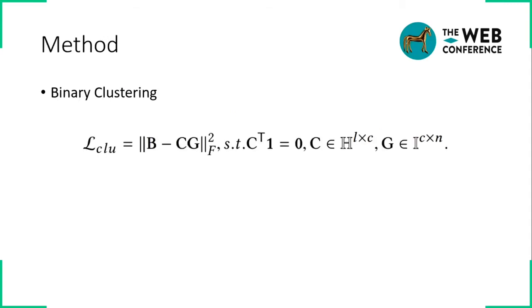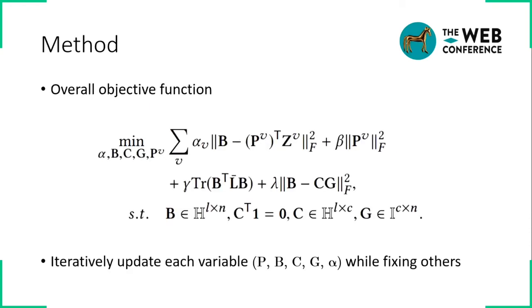The third part is the binary clustering, which is similar to k-means. The first constraint C transpose one ensures the balance property of the cluster centers, which is the typical requirement of the binary embedding.